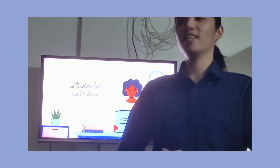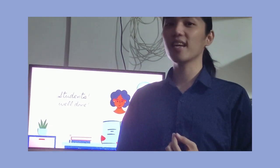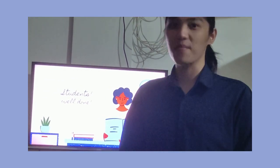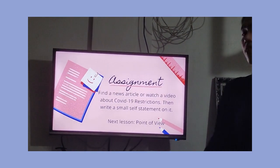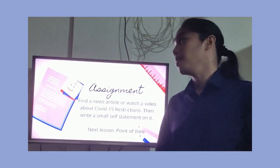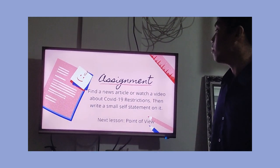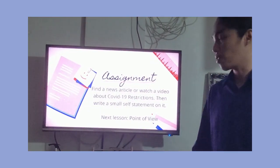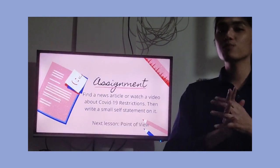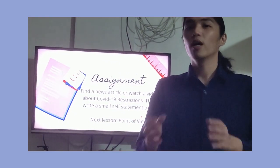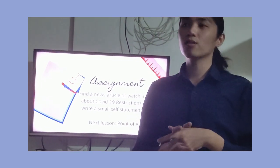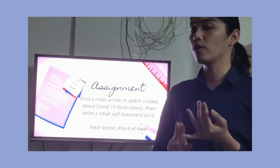Well done, students! You applied what you've learned — the structure and characteristics of academic writing. For your assignment, find a news article or watch a video about COVID-19 restrictions, then write a small statement about what you've read or watched. On our next lesson, we're going to talk about point of view.